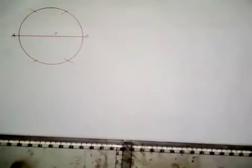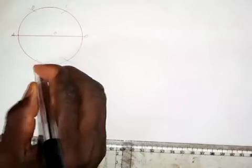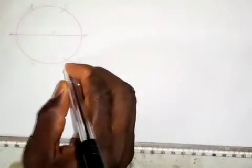So with what I've done here now, this point here is point C. This is point C and this is point D. This is point E and this is point F.